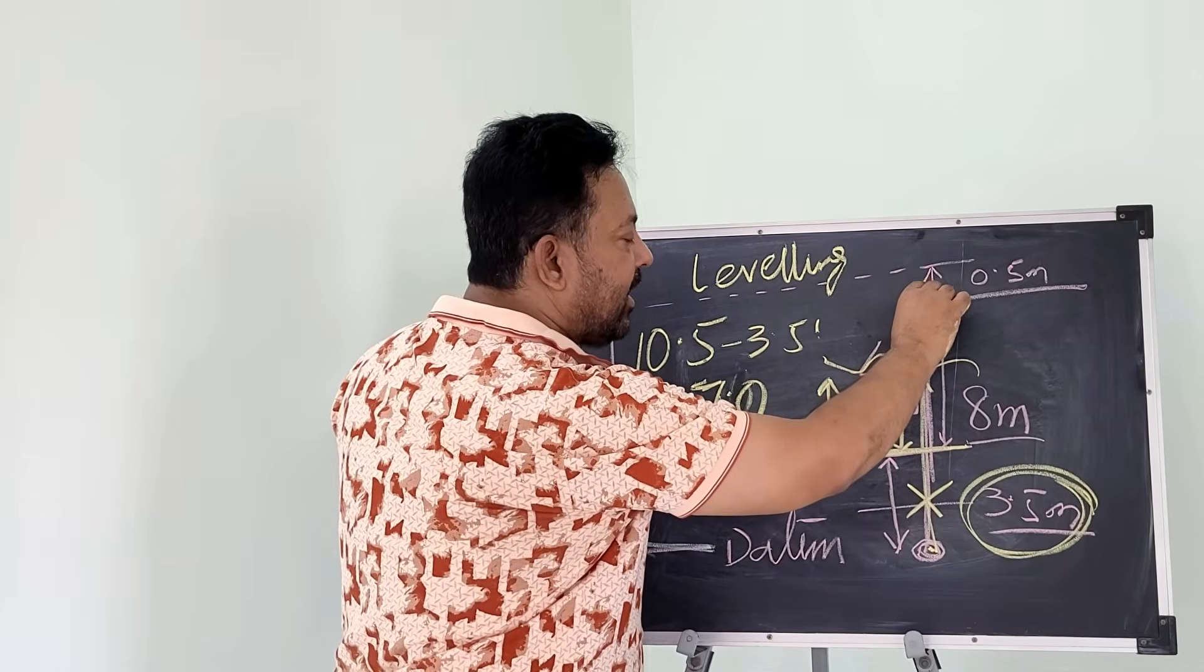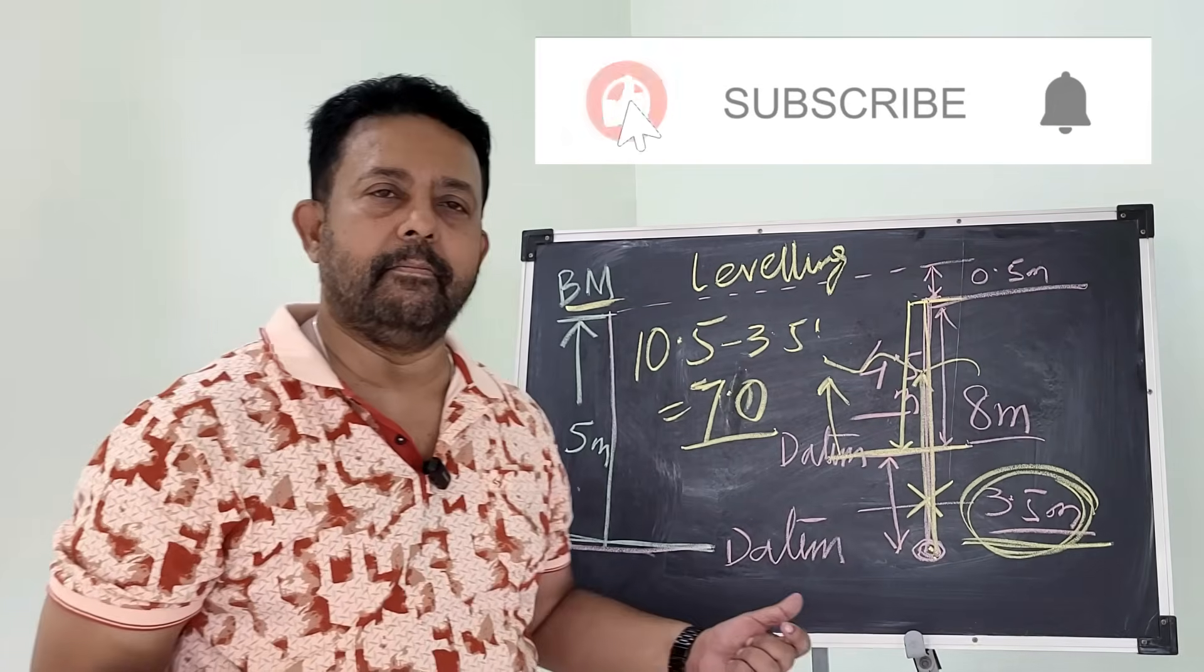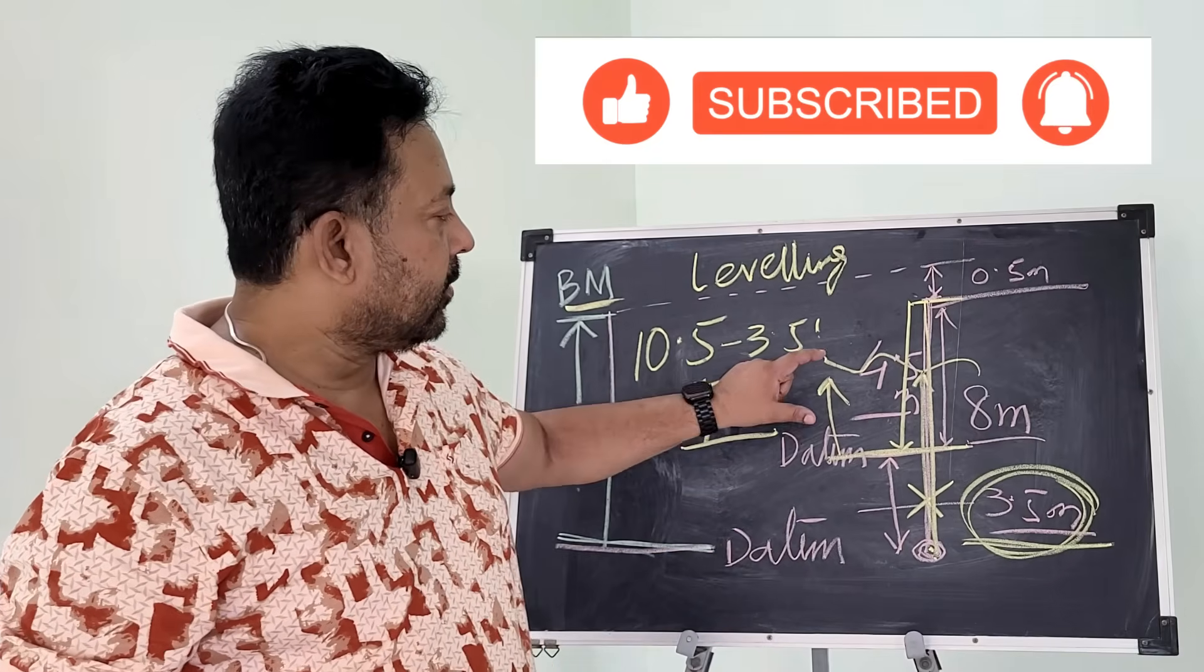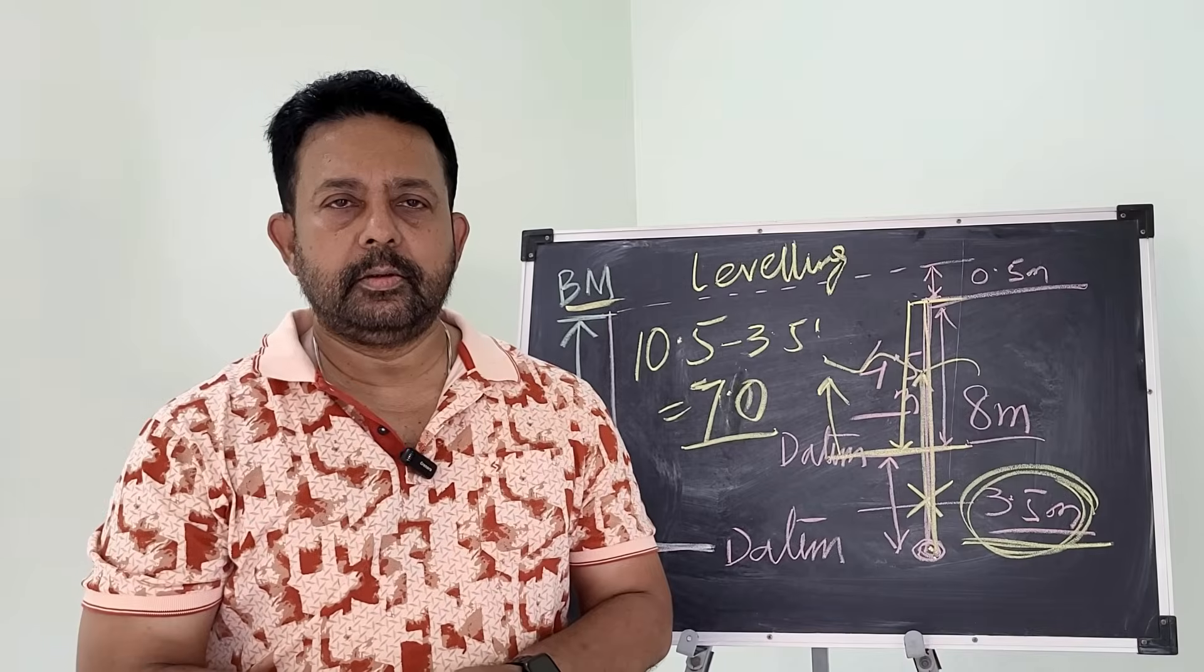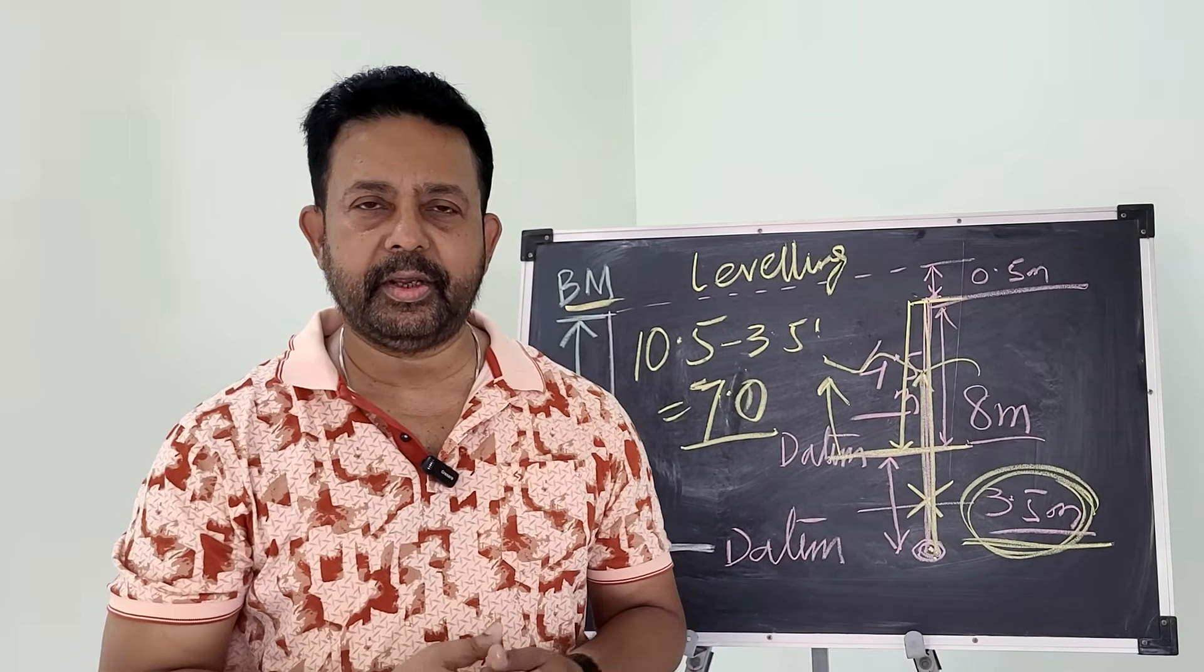Then subtract that to get the tide gauge under the datum, from how much you have lowered, and then you get your tide from the datum. So I hope this small video is helpful to you. Always ask questions and be curious.